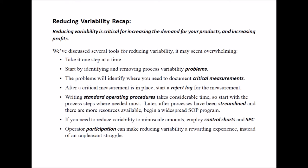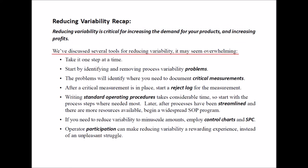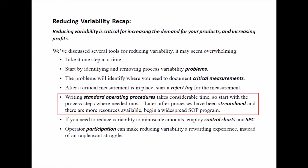Let's recap what we've discussed concerning variability. Reducing variability is critical for increasing the demand for your products and increasing profits. We've discussed several tools for reducing variability and it may seem overwhelming. So take it one step at a time. Start by identifying and removing process variability problems. The problems will help to identify where you need to document critical measurements. After a critical measurement is in place, start a reject log for the measurement. Writing standard operating procedures takes considerable time, so start with the process steps where you are needed most.